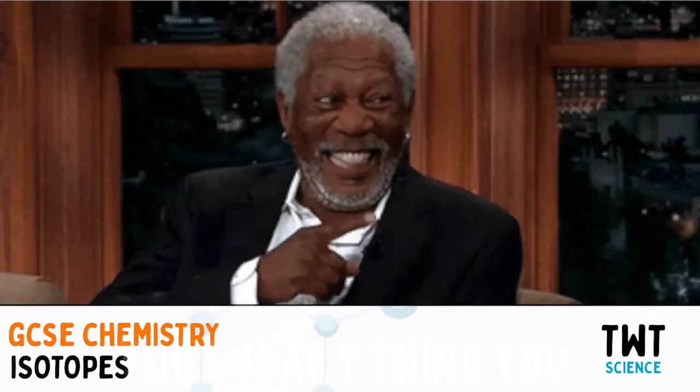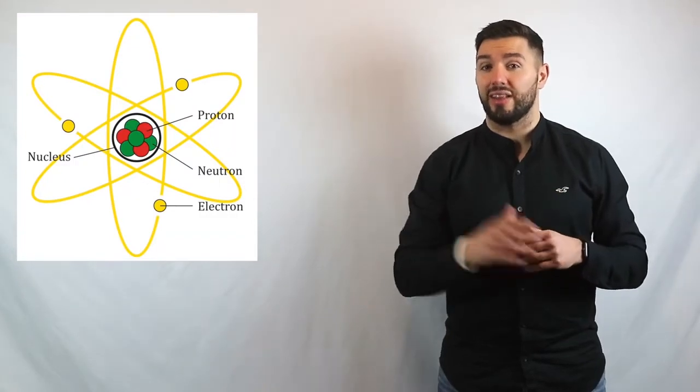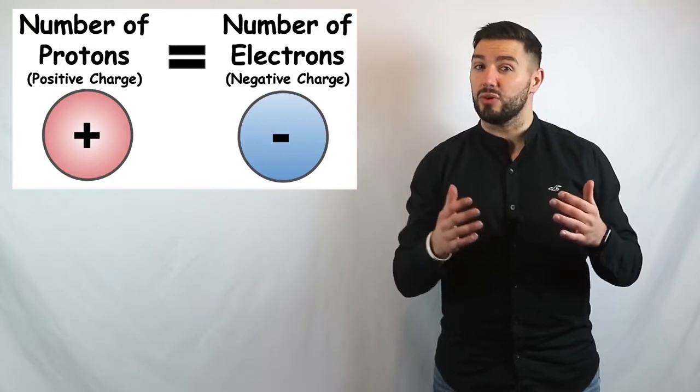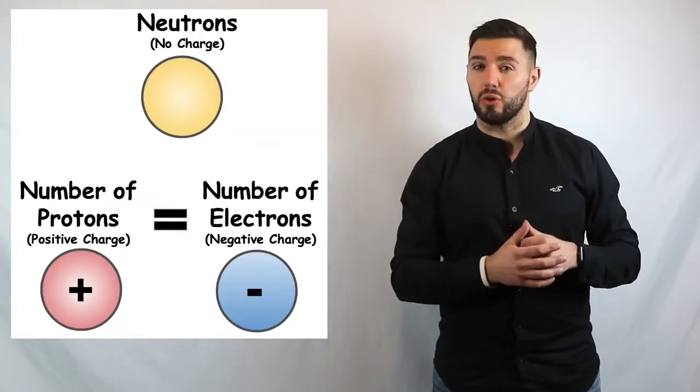In today's topic, we're looking at isotopes, and if you hang around to the end, I'll give you a bonus tip for your exams. Now, in a previous video, I told you that protons and neutrons existed inside the nucleus of an atom, and that electrons were on the outside. I also mentioned that protons and electrons had to be equal in number, but that the number of neutrons didn't have to be the same as the number of protons and electrons. If you want to look back at any of my previous content on the atom, there's a link on screen now.